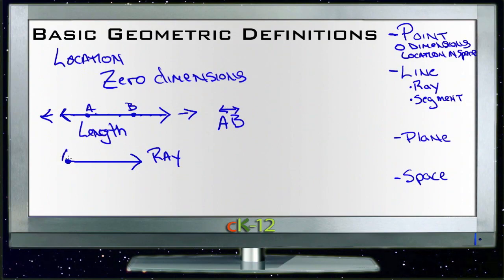With a ray, we describe it with this start point and then any other point on the ray, and we put an arrow on top of it that only has a point on one end, like so. Specifically, we put the start point first, and then the direction it continues in second with the arrow pointing in that direction.